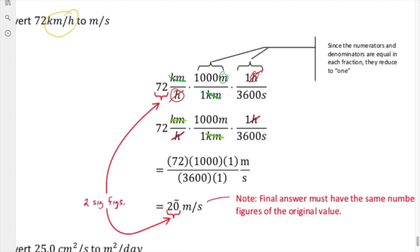Now we can cancel out the hours, and then we clean up the fraction. The 72 is technically in the numerator, so that's 72 times 1000 times 1 over 3600 times 1 of the denominator. The only units that are left are the meters and the seconds.